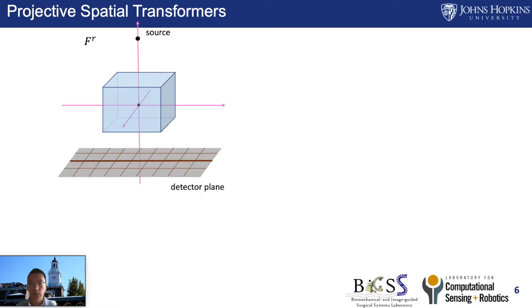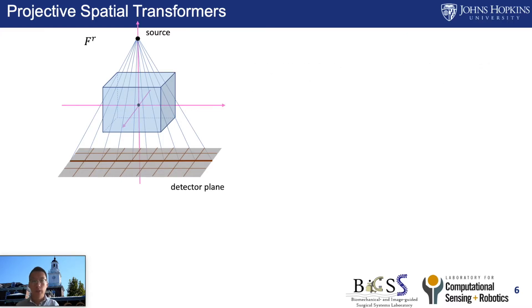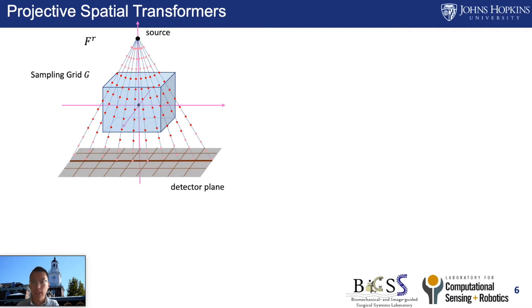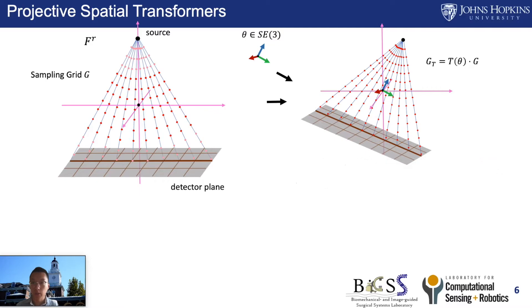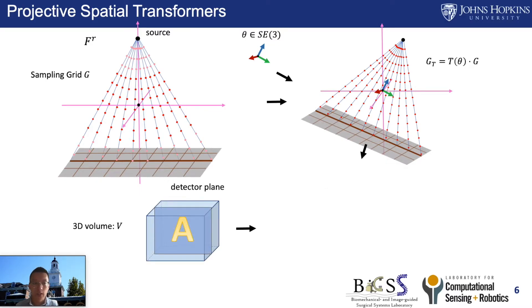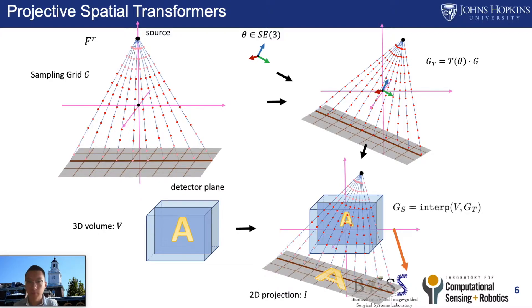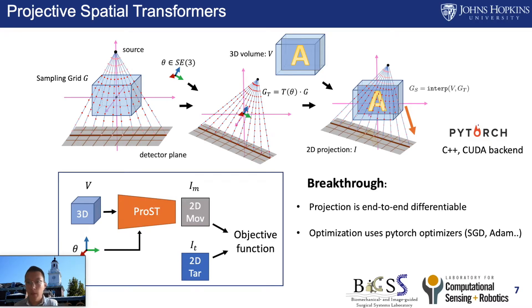Our projective spatial transformer follows the projection geometry defined by the camera intrinsic parameters. We define a 3D sampling grid along the raycasting line, which can be transformed by the pose parameters to produce a transformed sampling grid in 3D space. This transformed sampling grid is used to sample the 3D volume, and the 2D projection is a collapse from the interpolated sampling points. PROST is implemented in PyTorch with C++ and CUDA backend, and the projection operator is end-to-end differentiable with no learnable parameters.